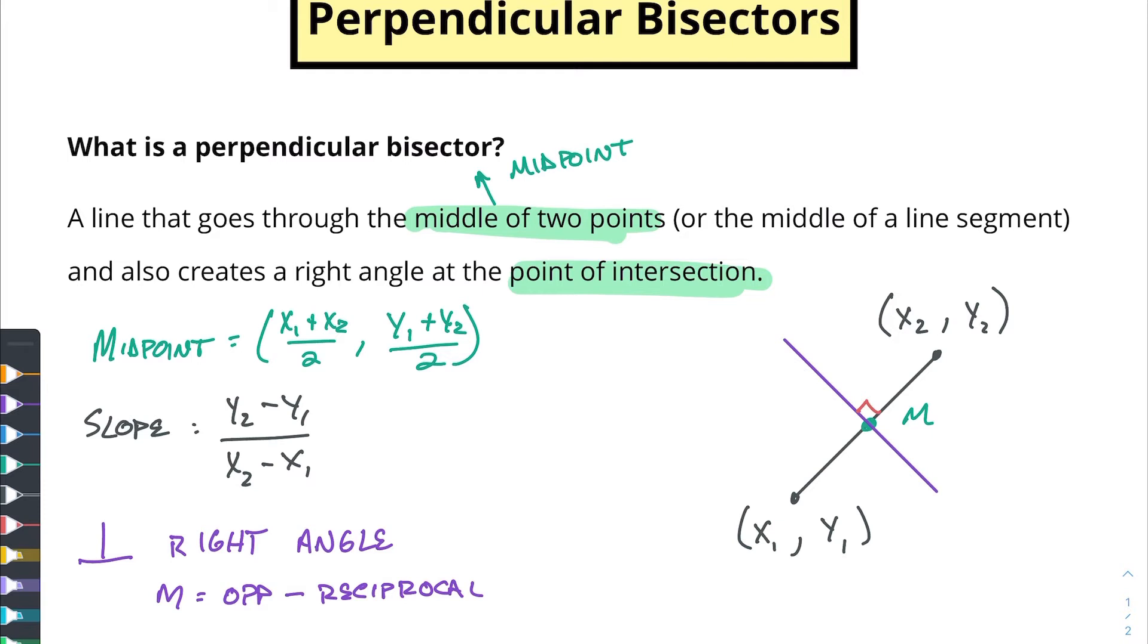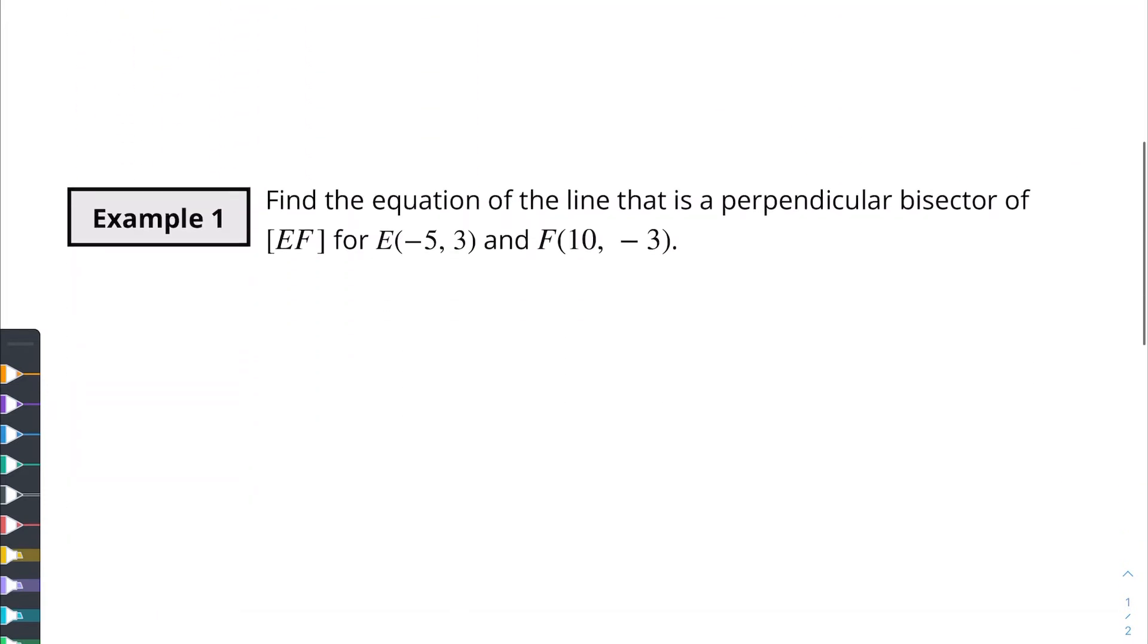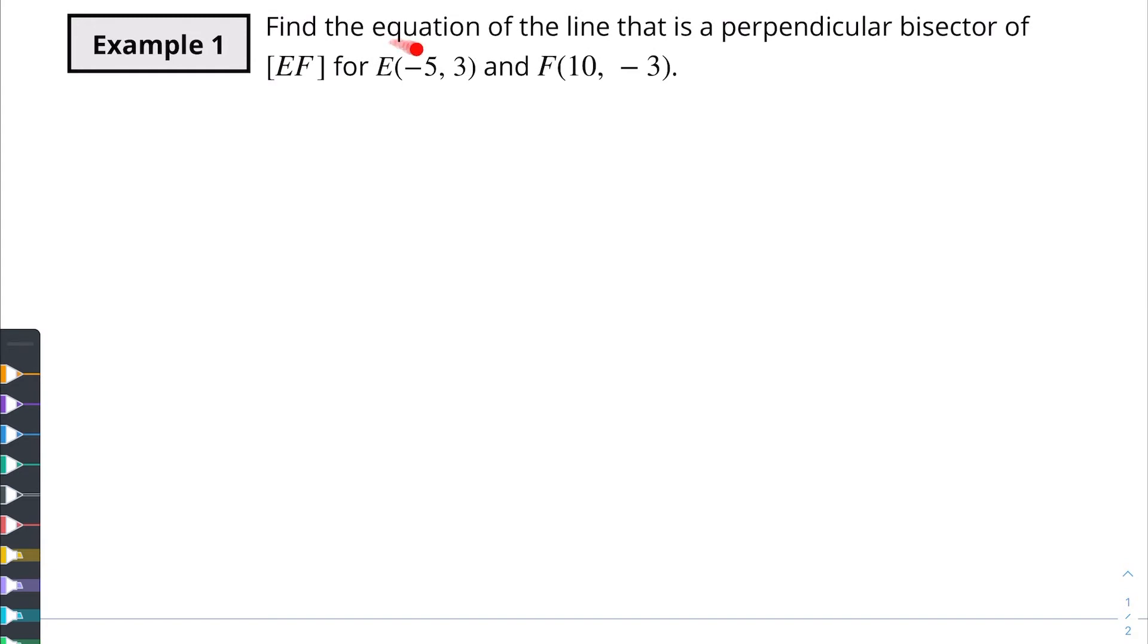So let's look at an example and see what comes out of this. Find the equation of the line that is a perpendicular bisector of EF when E is (-5, 3) and F is (10, -3).